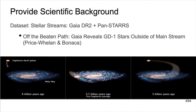We will start with the scientific motivation of the data set used throughout the workshop. It is important that you start with this background when teaching. The entire curriculum culminates in the creation of figure one from the paper 'Off the Beaten Path: Gaia Reveals GD1 Stars Outside the Mainstream' by Price, Whelan, and Binaca. Throughout the workshop, you will develop a series of more restrictive filters to identify the members of a globular cluster tidally stripped by the Milky Way, now forming a stellar stream called GD1, using data from the Gaia and Pan-STARRS surveys.